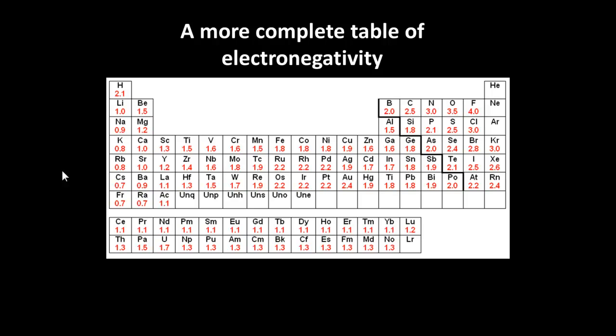This is just a complete table of electronegativity. In this case, fluorine was given a value of 4. But you'll see the same general principles are still there.